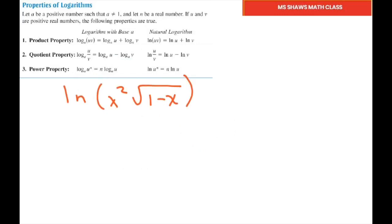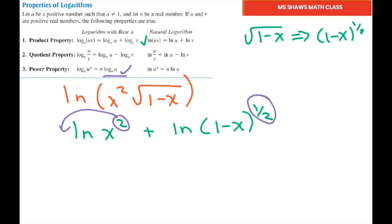And this one, okay, so we're going to go back to our product property. I'm also going to write the square root of 1 minus x as 1 minus x to the 1 half. So we have ln of x squared plus ln of 1 minus x to the 1 half. The second step is to use your power property. So you bring this 2 in front and we're going to bring this 1 half in front. So you get 2 times ln of x plus 1 half times ln of 1 minus x. And that's your final answer there.